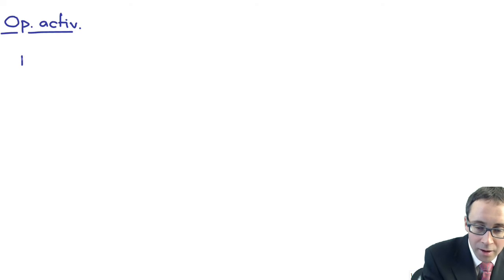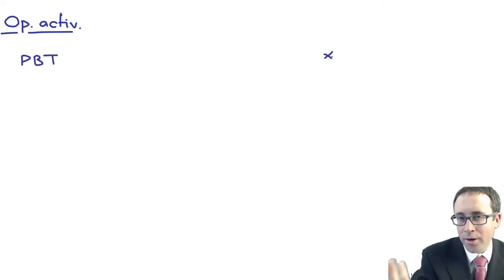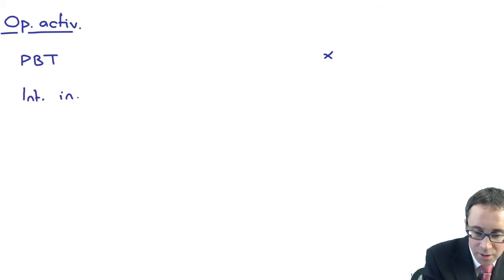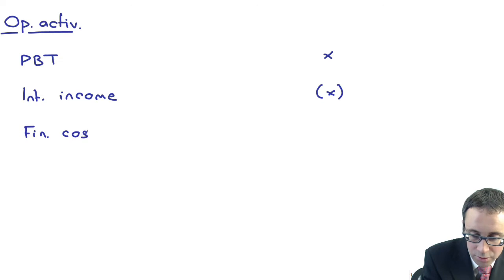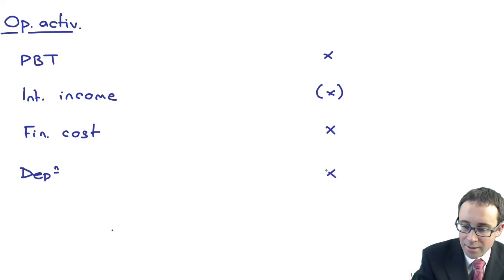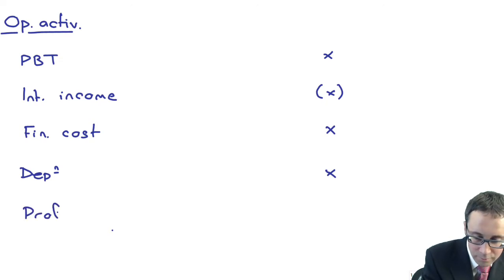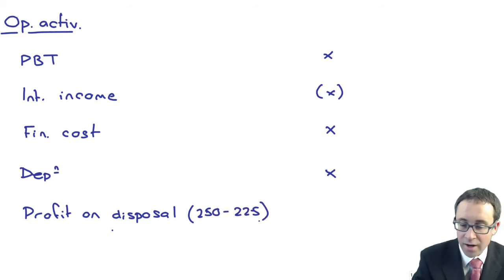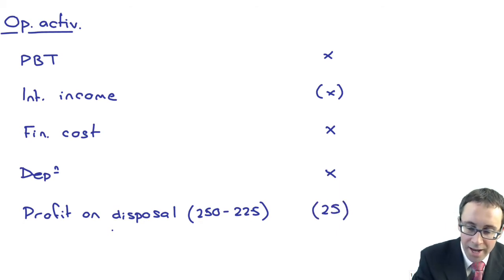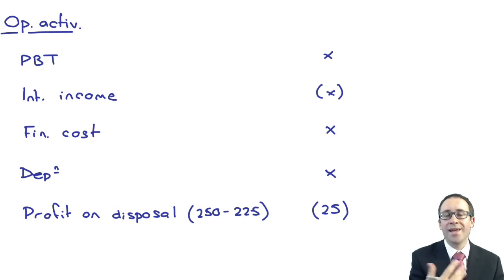Within your operating activities, you would start off with PBT. You would then deduct interest income, add back finance costs — a little bit of revision as we go along — and add back depreciation as a non-cash expense. Then we have the profit on disposal: we sold it for $250,000, carrying value was $225,000, so the profit is $25,000. That non-cash income has pushed up your profits but doesn't impact operating cash flows, so we need to deduct that profit.